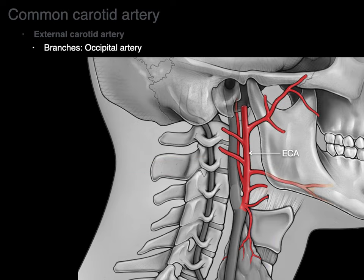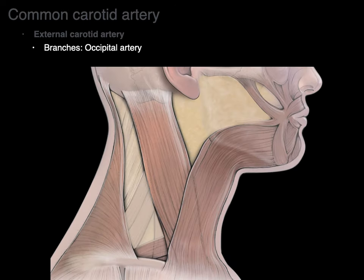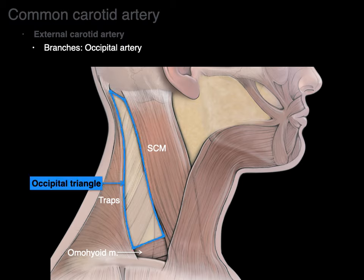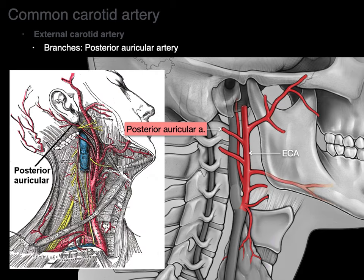The occipital artery supplies the back of the scalp. The sternocleidomastoid and trapezius muscles, along with the clavicle, form the posterior triangle of the neck. Subdividing that triangle with the omohyoid creates the occipital triangle, which gets its name from the occipital artery at its apex. The posterior auricular artery is the branch behind the ear — 'posterior' meaning behind, 'auricular' meaning ear — and it supplies the back of the scalp and the area behind the ear.